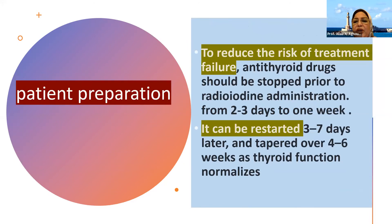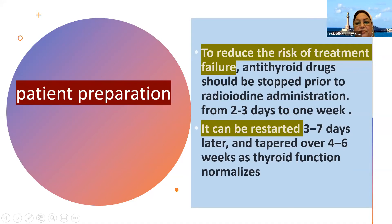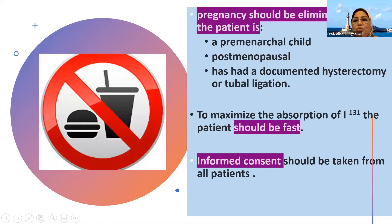To reduce the risk of treatment failure, antithyroid drugs should be stopped prior to radioiodine administration from two to three days up to one week. They can be restarted three to seven days later and tapered over four to six weeks as thyroid function becomes normal. Pregnancy should be eliminated unless the patient is pre-menarchal, post-menopausal, or has had a documented hysterectomy or tubal ligation.